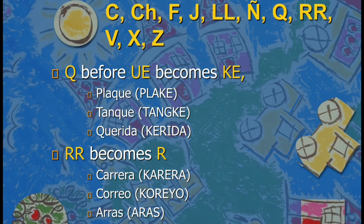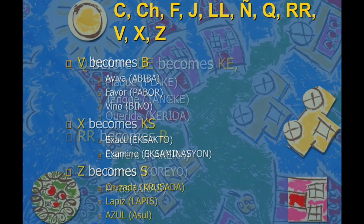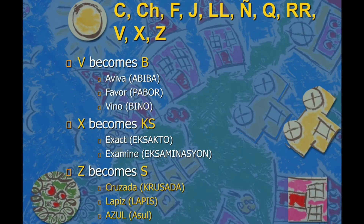RR becomes R — like carrera becomes Karera, and correo becomes Koreo. Arras becomes Aras. Aras is somewhat sour, or irritating to your throat. V becomes B — like aviva becomes Abiba, and favor becomes Pabor. And vino becomes Bino. Now, X becomes KS.